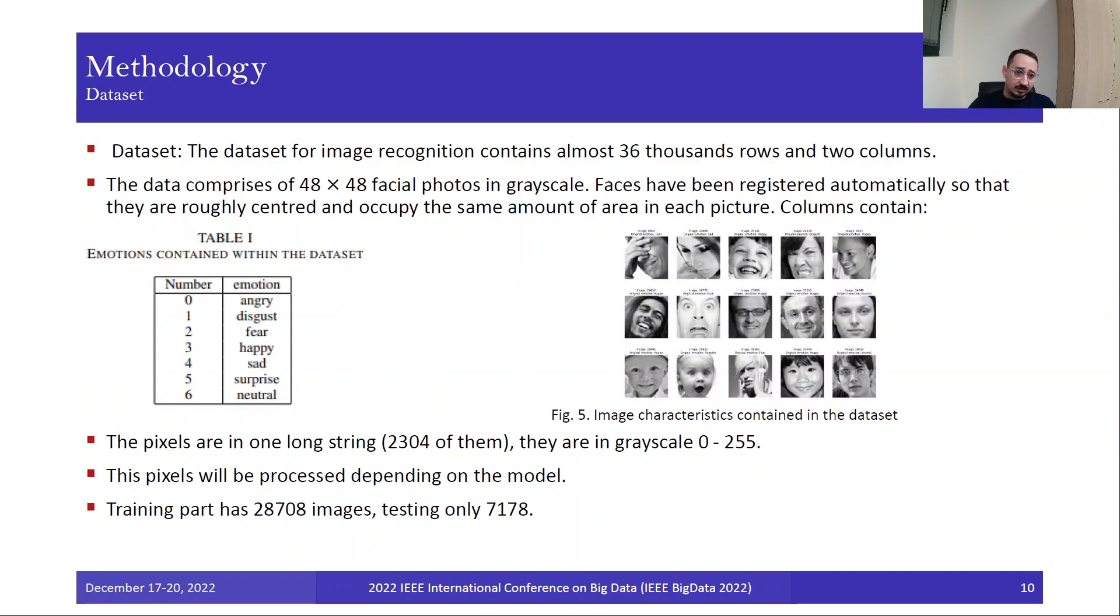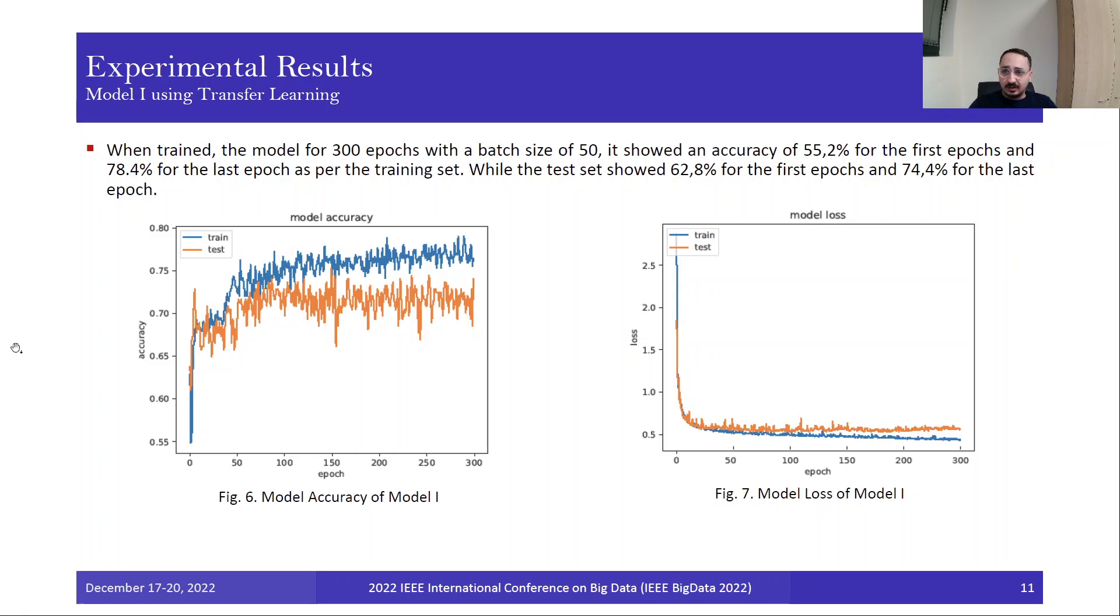A few words about the dataset. The dataset for the image recognition part contains almost 36,000 rows and two columns. The data is comprised of 48×48 facial photos in grayscale. Faces have been registered automatically so they are roughly centered and occupy the same amount of area in each picture. The columns contain a number from 0 to 6 and an emotion: 0 is angry, 1 is disgust, 2 is fear, 3 is happy, and so on. The pixels are one long string and are in grayscale from 0 to 255. The pixels are processed depending on the model we use. The training part has 28,000 images and testing has 7,000. We sample and utilize a portion of the whole dataset.